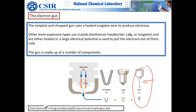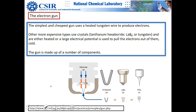Two popular emitter materials are tungsten filament — very common and cheap, used for thermionic emission — and lanthanum hexaboride, which is a better version. Carbon nanotubes and other possibilities have been researched but no commercial products have emerged.